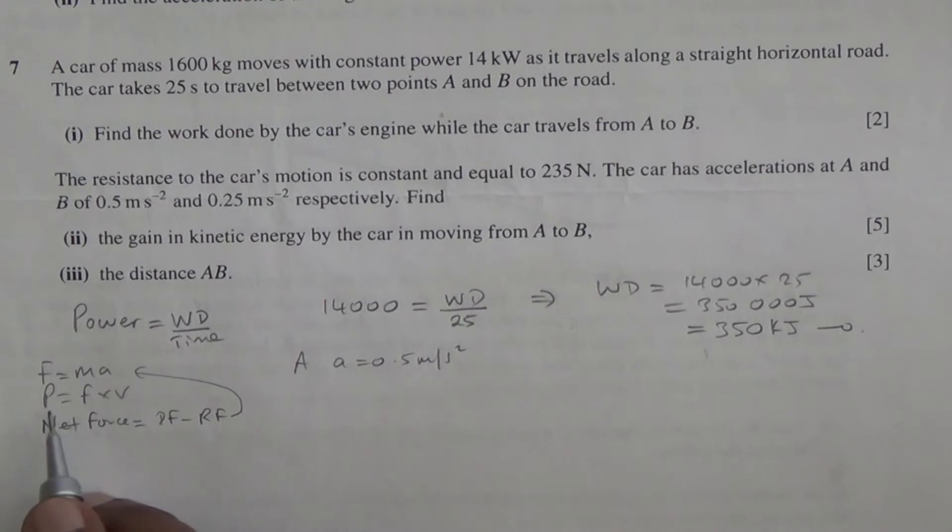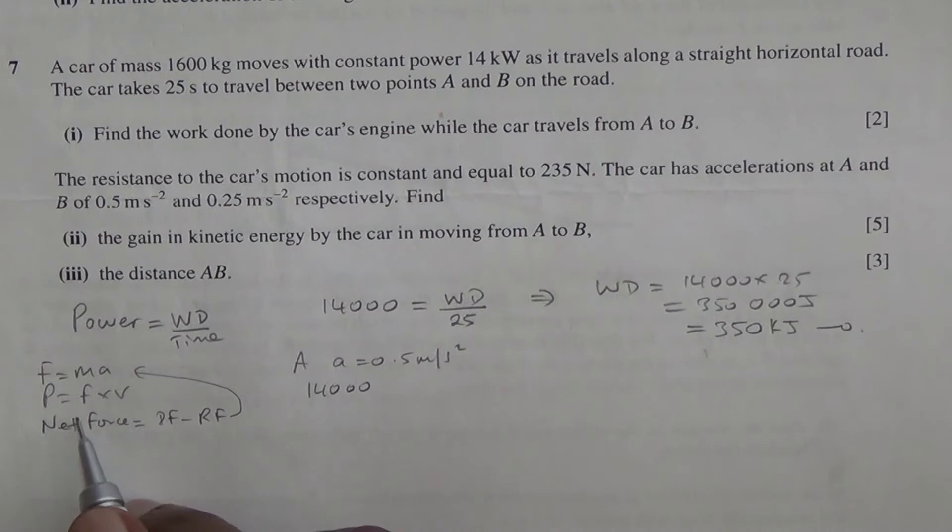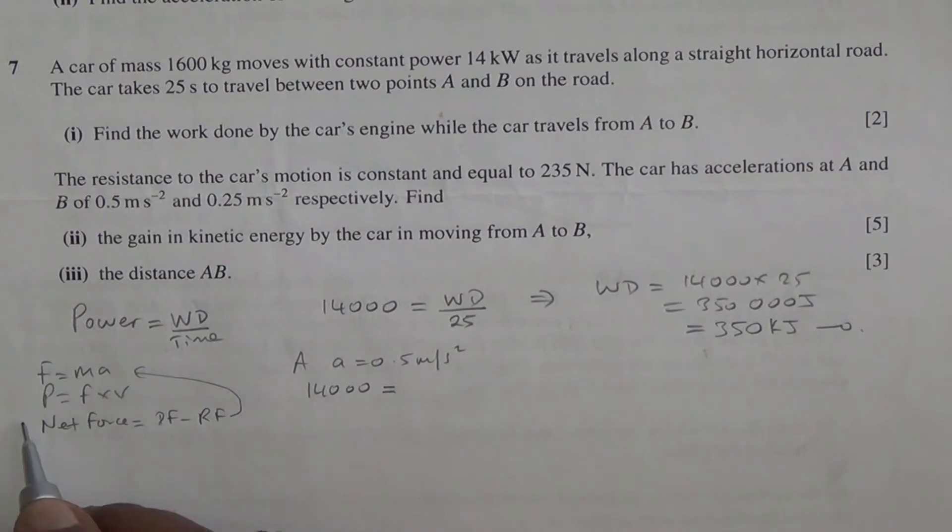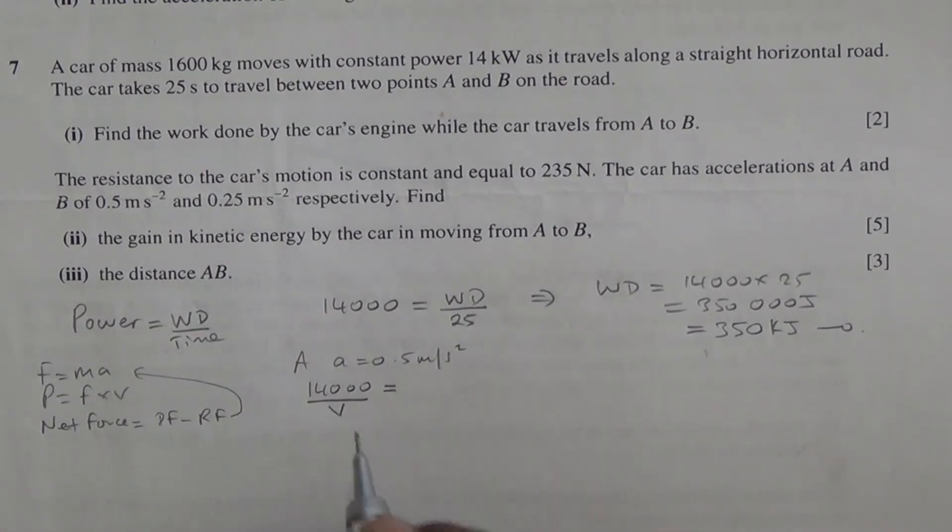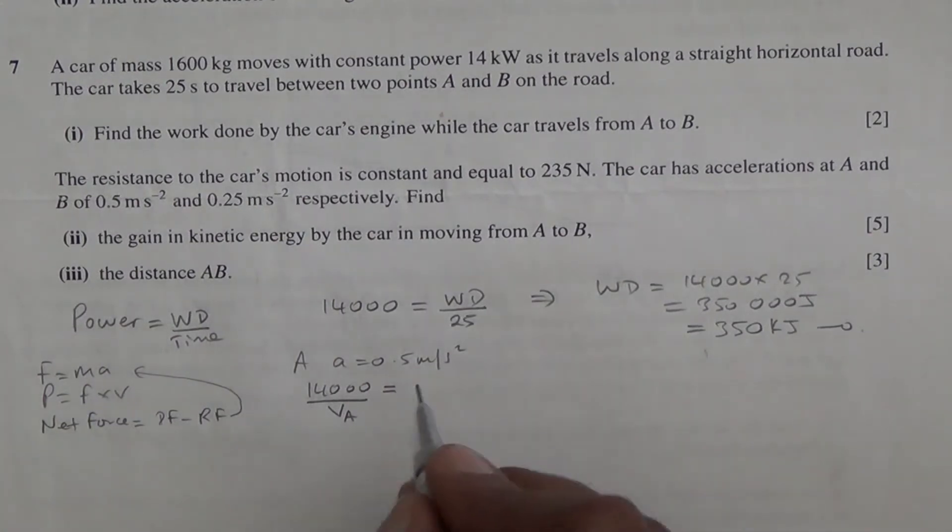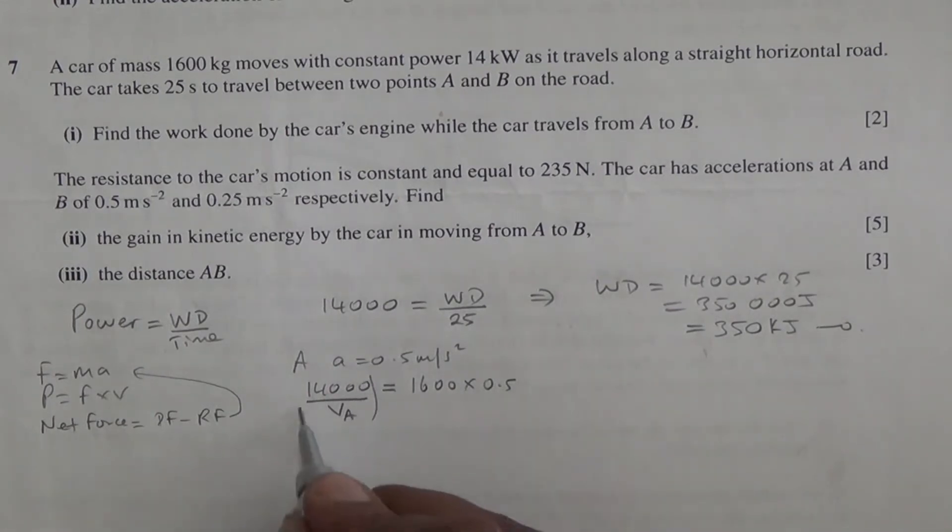And we know that the power is 14,000 watts. And that power is equal to force multiplied by velocity. In other words, we're saying that the velocity can come here, we can divide by the velocity. The velocity at A is going to be equal to the force. The force is mass times acceleration, and the mass times acceleration is 1600 times 0.5. Now this is the driving force.